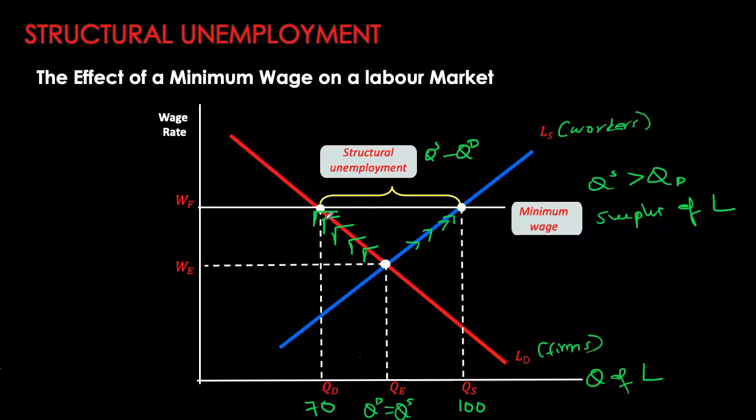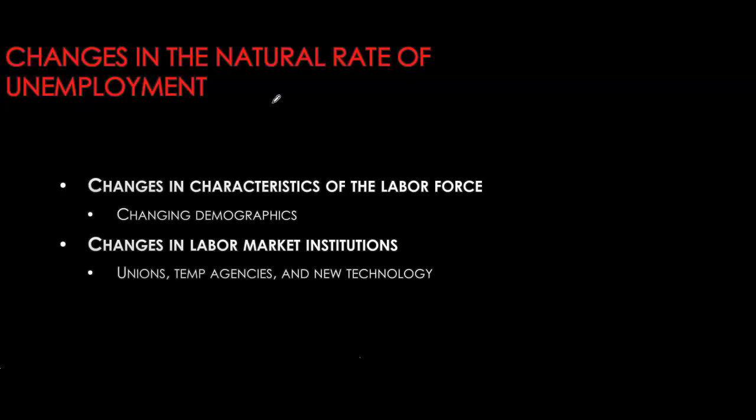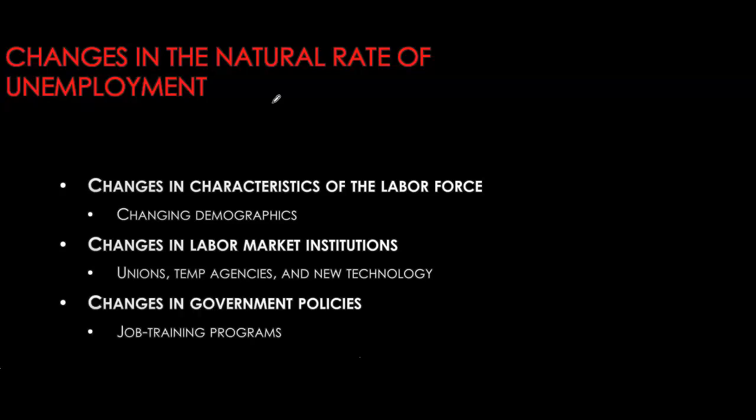Structural unemployment only arises when the wage rate is higher than the market clearing rate. The natural rate of unemployment is not static — it changes with characteristics of the labor force. Changing demographics and labor market institutions affect it; economies with strong labor unions typically have higher natural rates. With improvements in technology for posting resumes and connecting with employers, frictional unemployment has gone down over time. Government policies such as job training programs can help match workers to available jobs, reducing structural and natural unemployment.